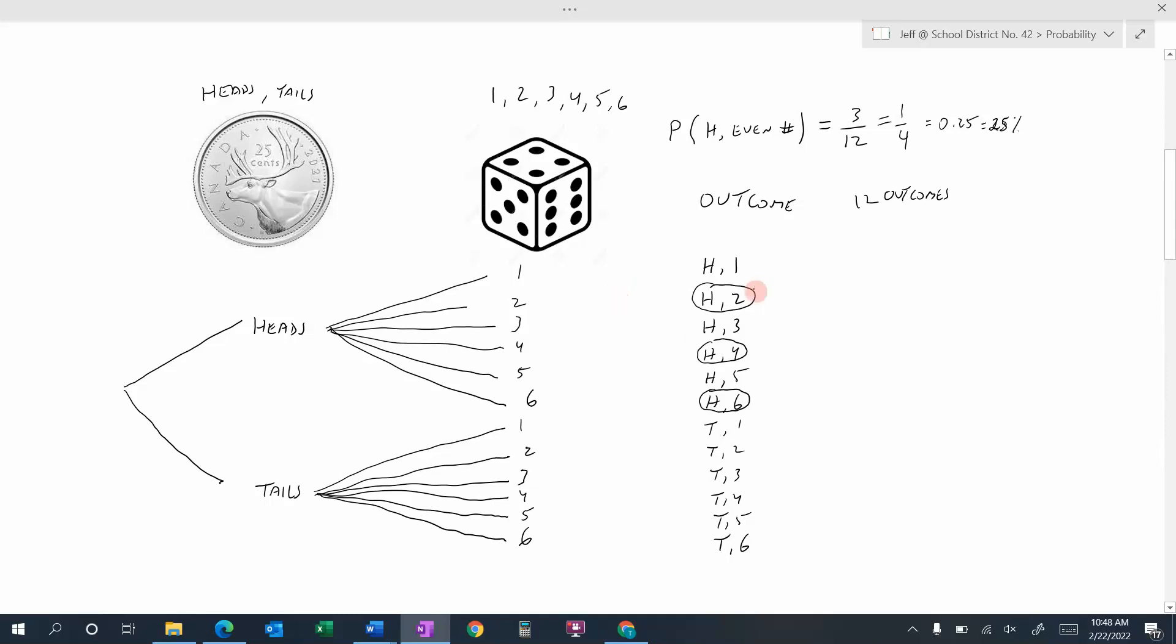And we kind of did this already in a previous video. We learned how to do the sample space by doing things like a tree diagram, and we could count the number of outcomes.